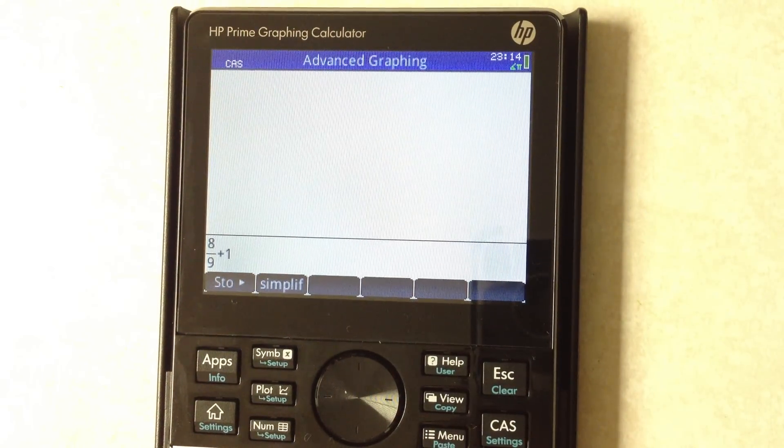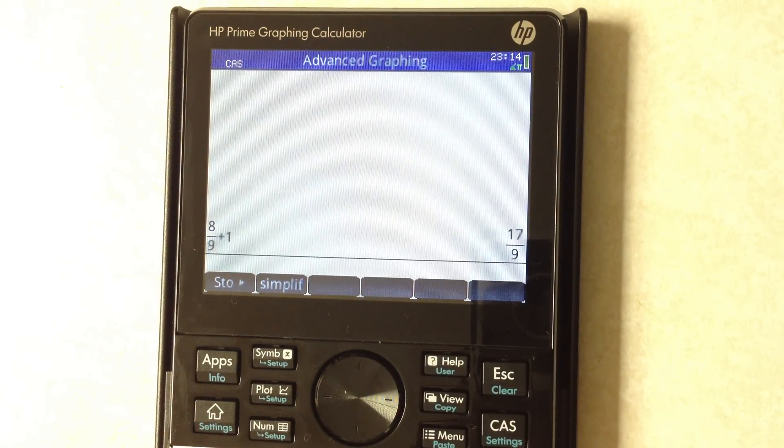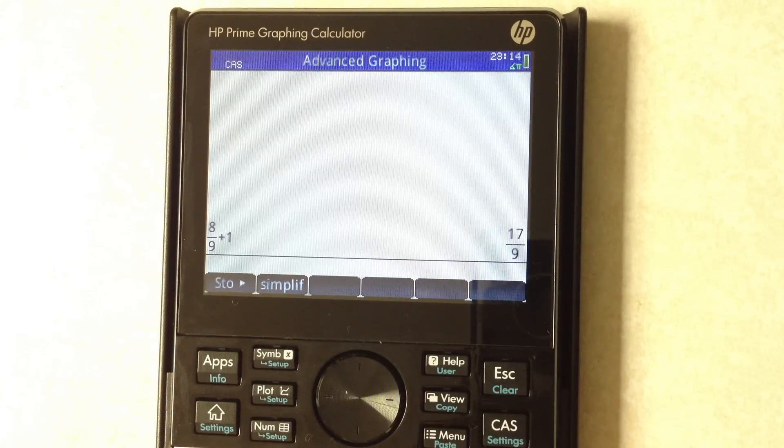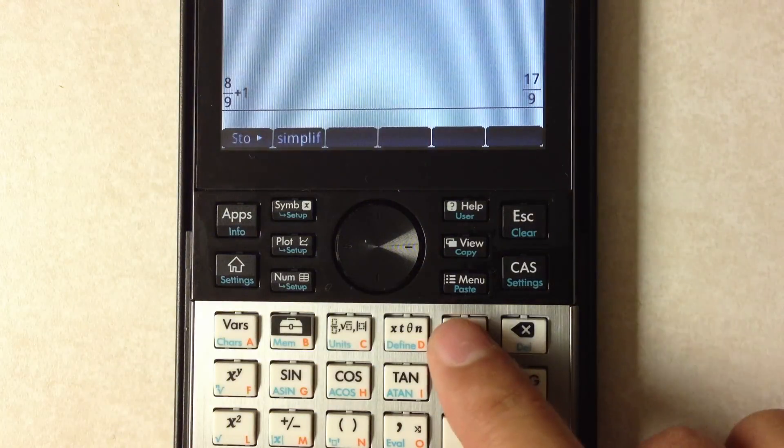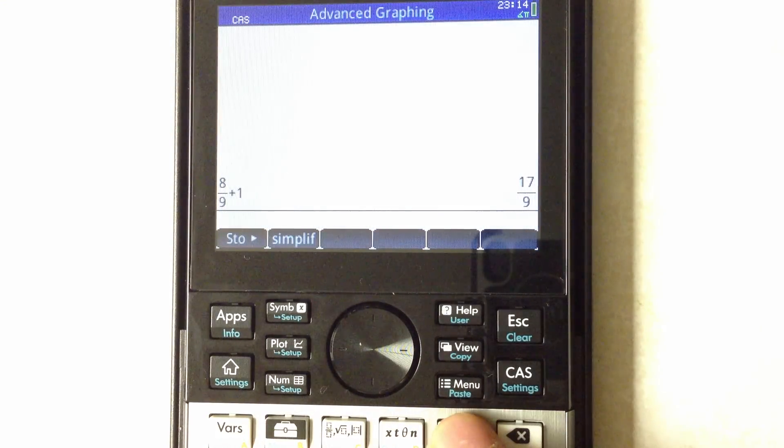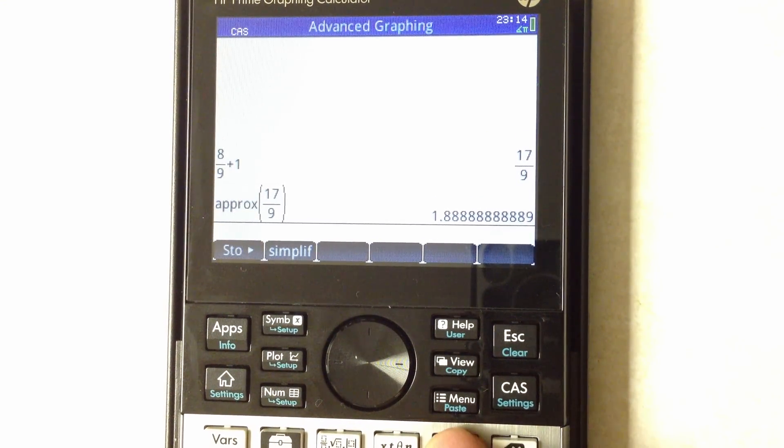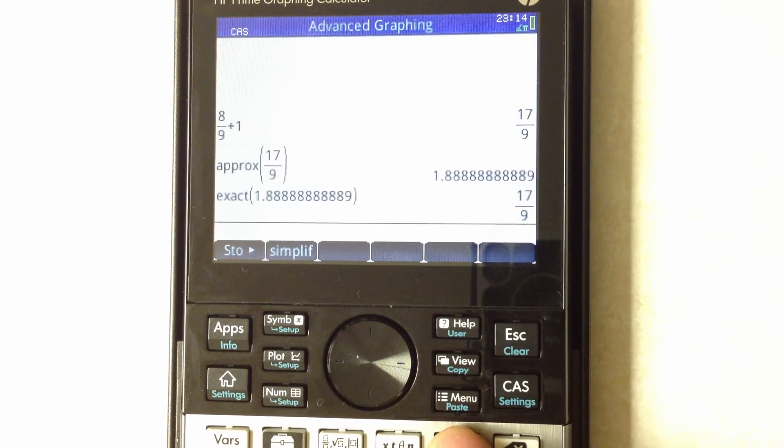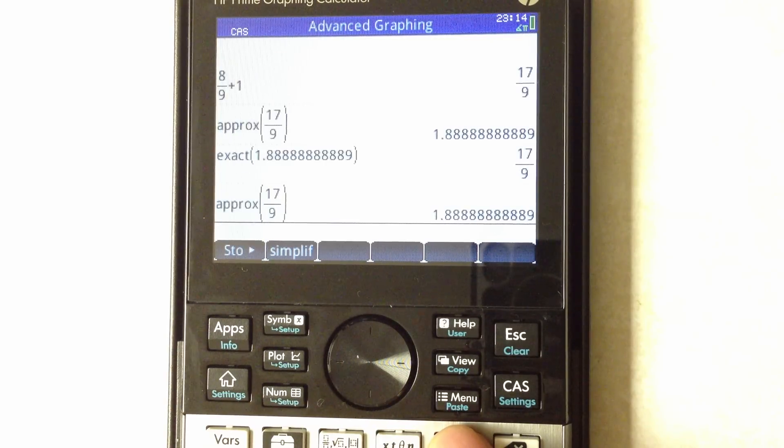Let's hit the enter key. So it computes that as an exact value, but it turns out that if you use this button right there it will convert over into decimal form.